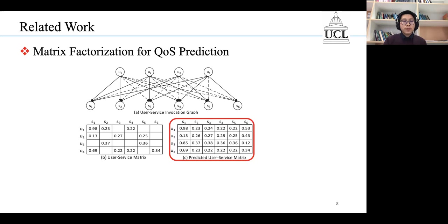Specifically, we factorize the user-service matrix X into two low-rank factor matrices U and S. Here, U denotes the latent features of users, and S denotes the latent features of services.